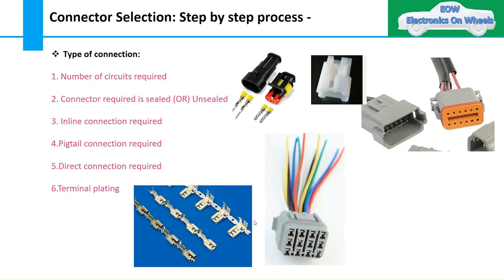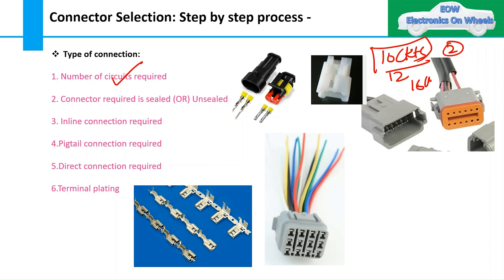Moving to the type of connection, which falls under electrical requirements. First, determine the number of circuits required. If you need 10 circuits, you would typically specify a 12-pole or 16-pole connector, keeping two to four cavities as buffer for future features. Second, determine whether the connector needs to be sealed or unsealed: sealed connectors for wet zones and unsealed for dry zones.